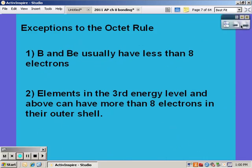There's two exceptions to the octet rule. Boron and beryllium usually have less than eight electrons so satisfy everything else and if you have extra electrons you can place them on boron and beryllium. But don't double or triple bond to satisfy them. And finally elements in the third energy level and above can have more than eight electrons in their outer shell and that's because they have an empty d orbital.